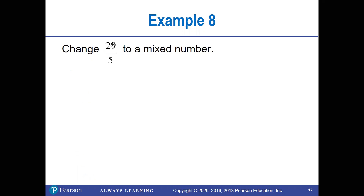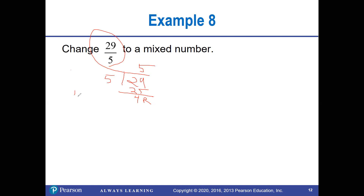To change an improper fraction back to a mixed number, we do the opposite: see how many times 5 goes into 29. Five goes into 29 five times with a remainder of 4. So the answer is 5 and 4/5. That's one of the easier ways of doing that.